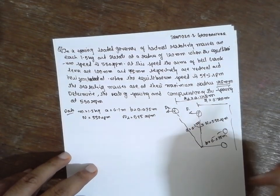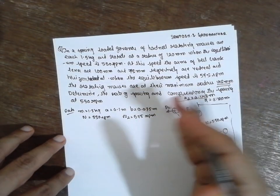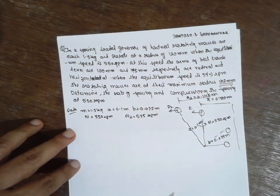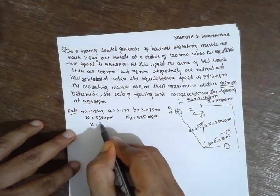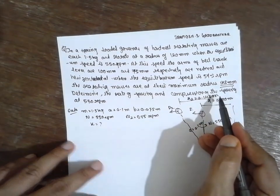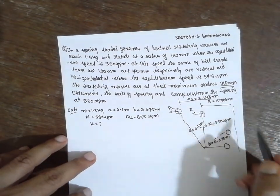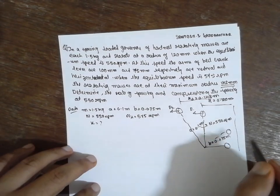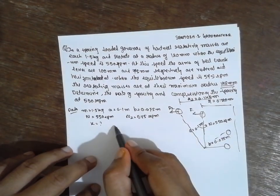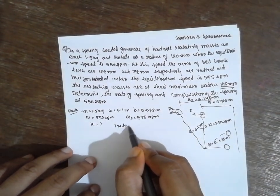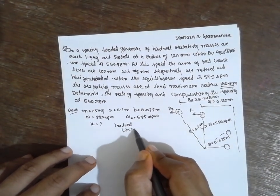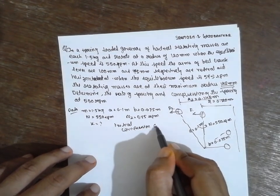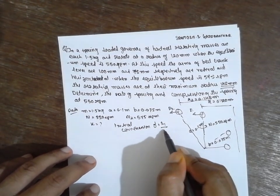The comparison has to be done between the equilibrium and the maximum conditions. We have to find out the stiffness K and the initial compression of the spring. The initial compression of the spring is given by the formula delta equals S1 divided by K.